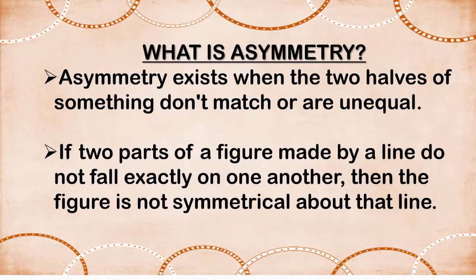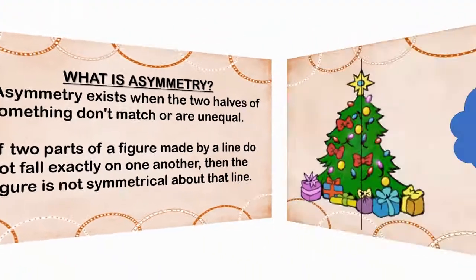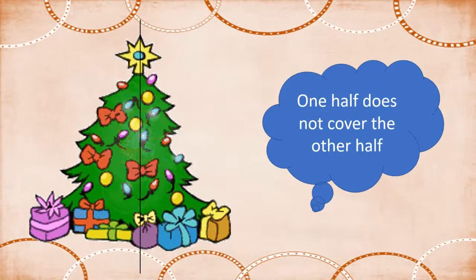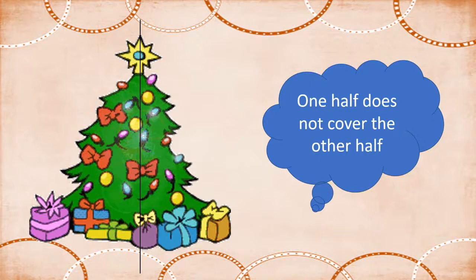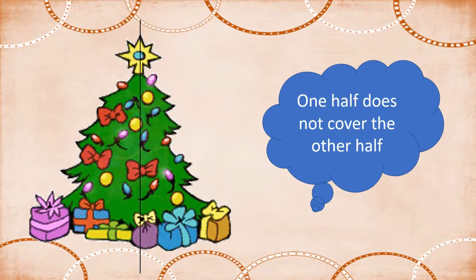Let's see the examples of asymmetry. Children, now look at this figure. The fold along the line in the Christmas tree divides it into two parts which do not fall exactly on one another. So, the Christmas tree is asymmetrical with respect to this line.